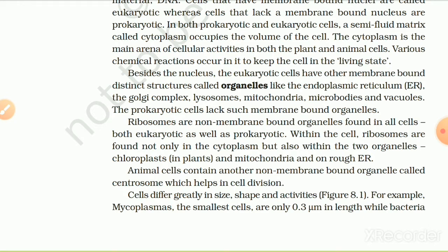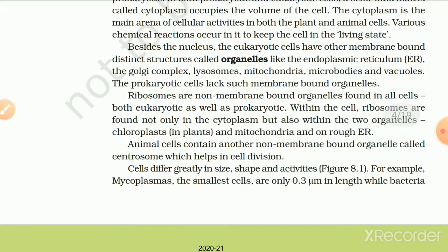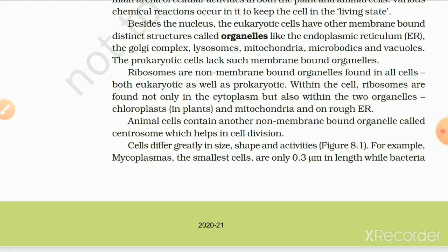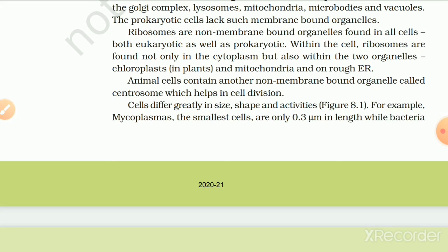Cells that have membrane-bound nuclei are called eukaryotic, whereas cells that lack a membrane-bound nucleus are prokaryotic. Beside the nucleus, eukaryotic cells have other membrane-bound distinct structures called organelles, like the endoplasmic reticulum (ER), the Golgi complex, lysosome, mitochondria, microbodies and vacuoles. The prokaryotic cells lack such membrane-bound organelles. Ribosomes are non-membrane-bound organelles found in all cells, both eukaryotic and prokaryotic. Animal cells contain another non-membrane-bound organelle called the centrosome, which helps in cell division.